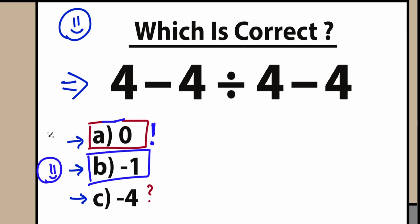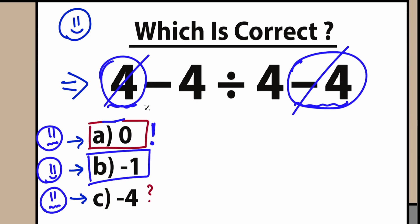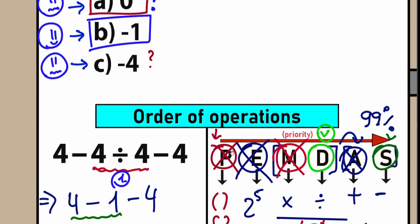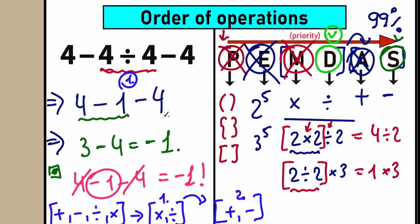You should be proud of yourself if you solved this correctly. If you got minus four, you need to review basic math. The correct answer is minus one. Here's an interesting trick: we have 4 on the left side and minus 4 on the right side — we can cancel those, leaving minus 4 divided by 4, which equals minus 1. That's a quick algebra trick.